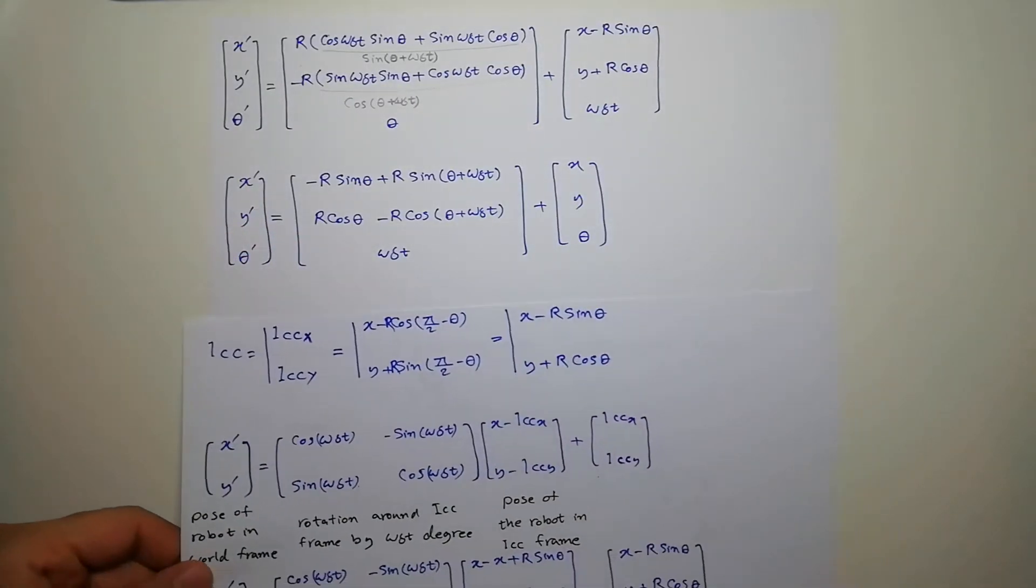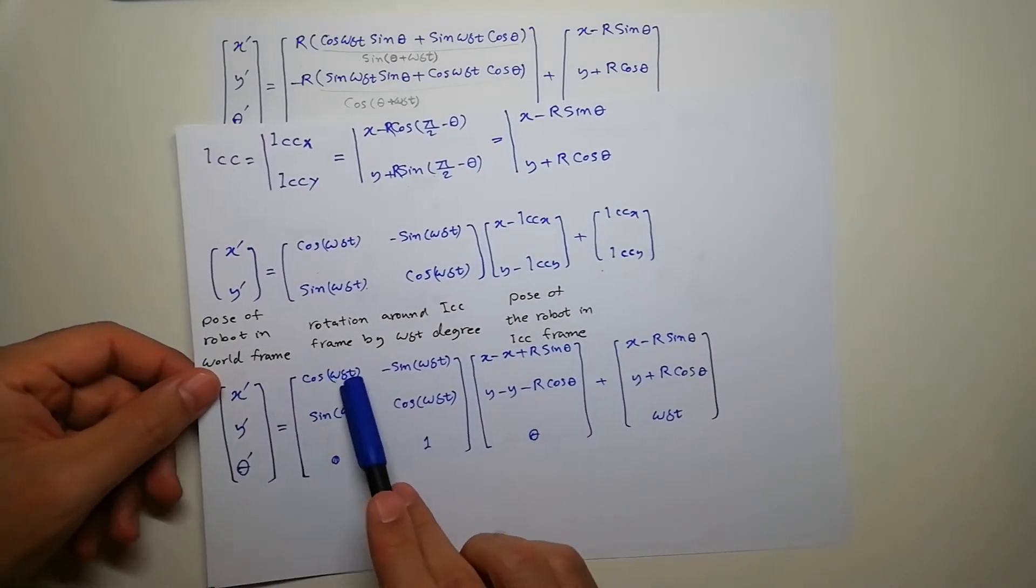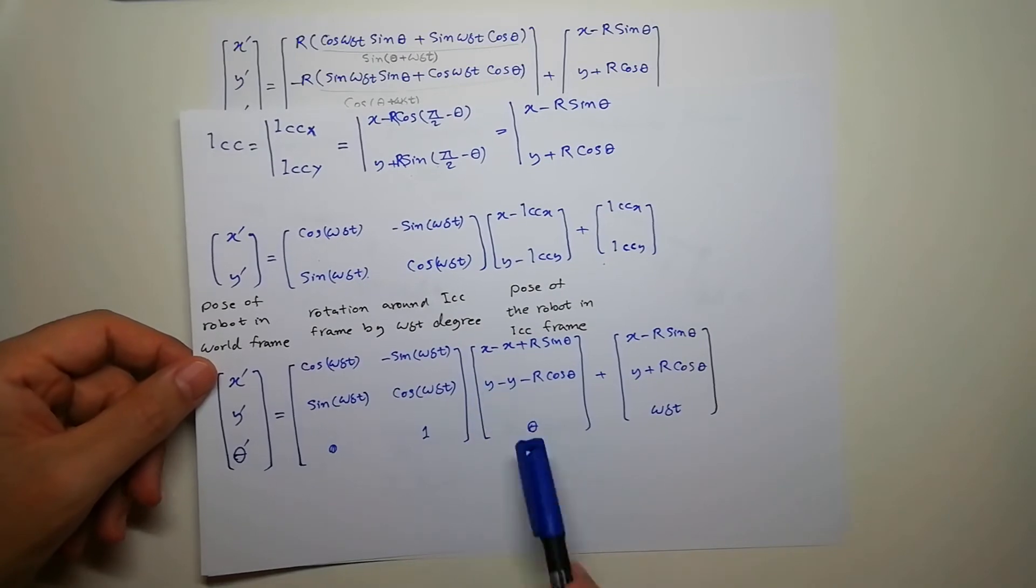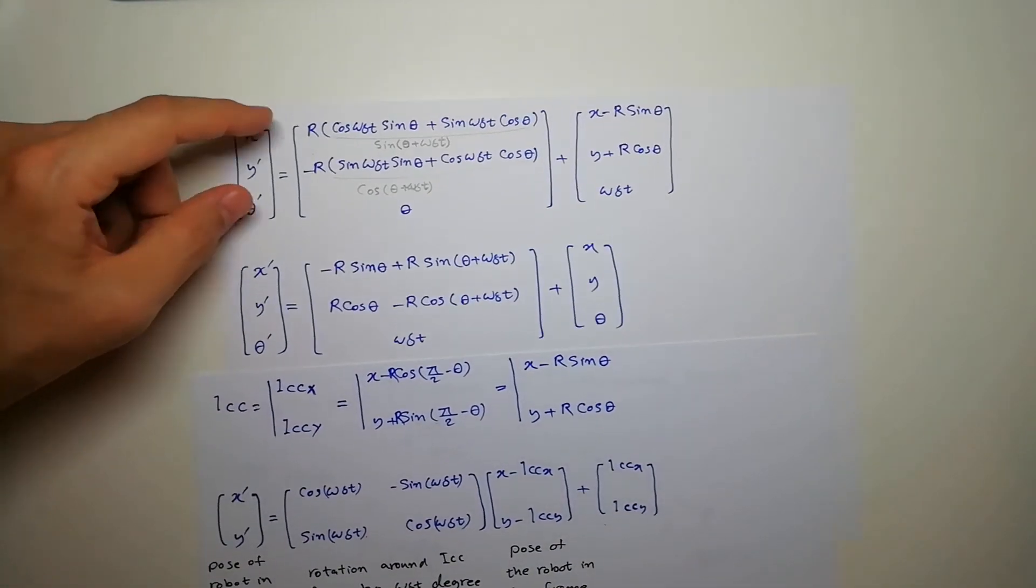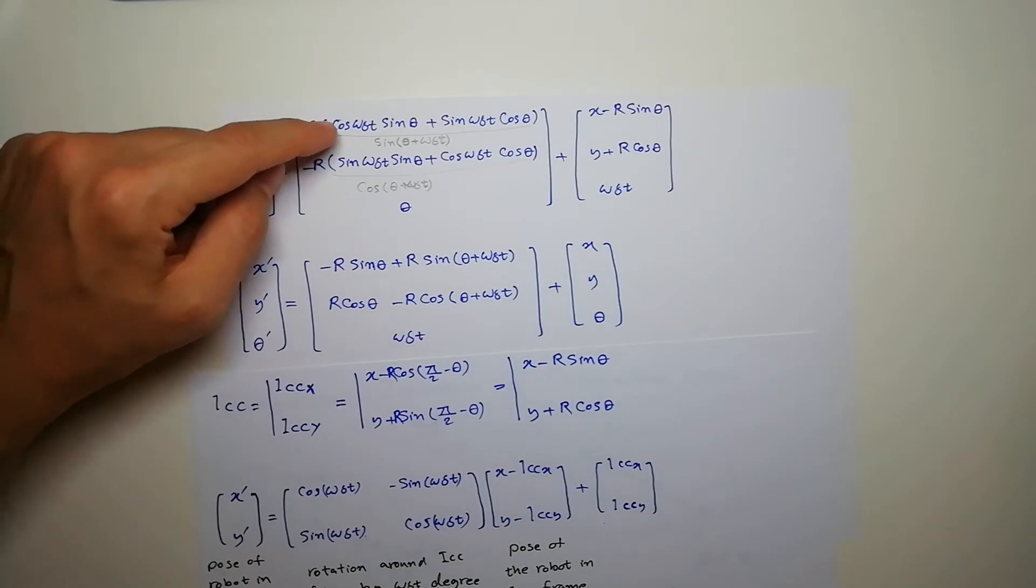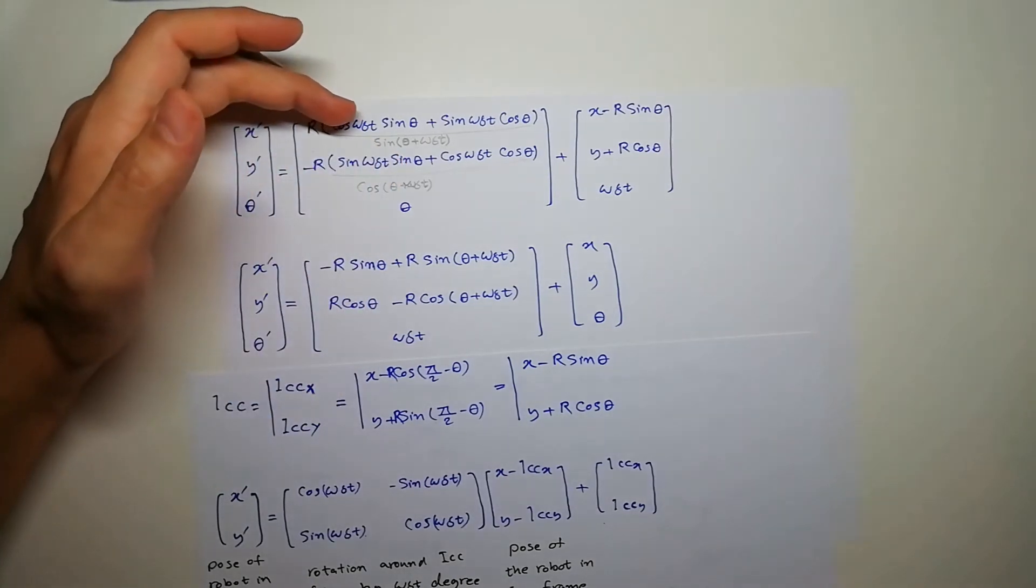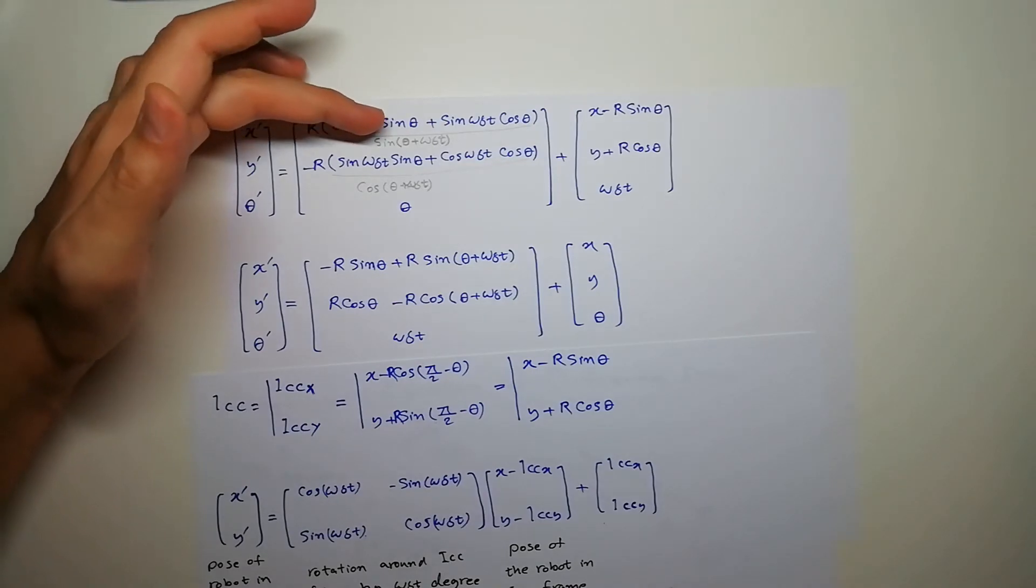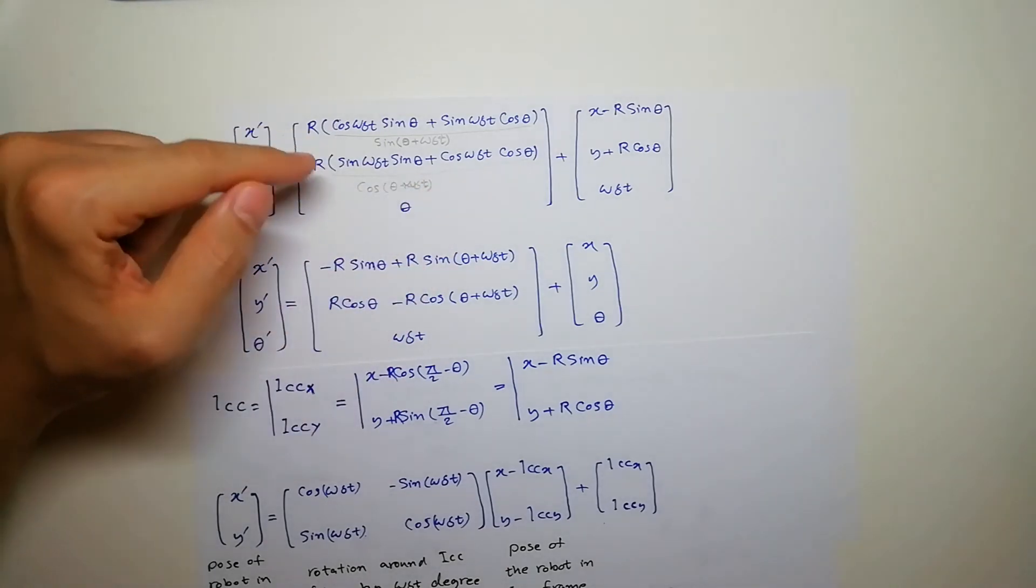If we plug this equation all together and multiply this term by this term and this term by this term, we can get this. And we know that this is actually sine of theta plus omega delta theta and also this term is a cosine of that.